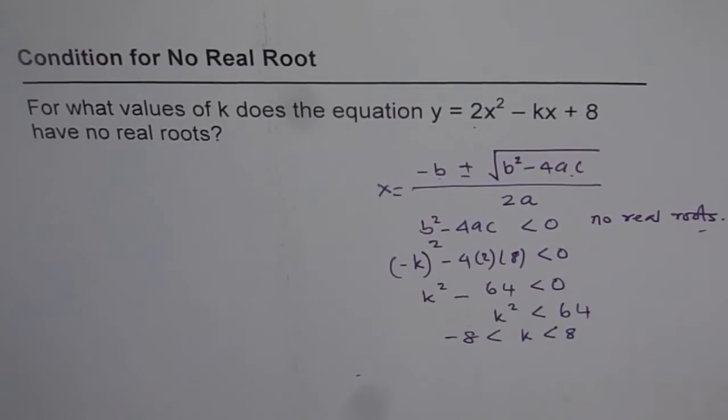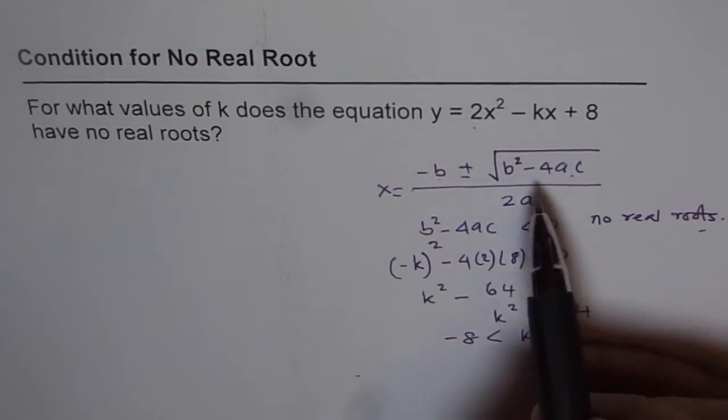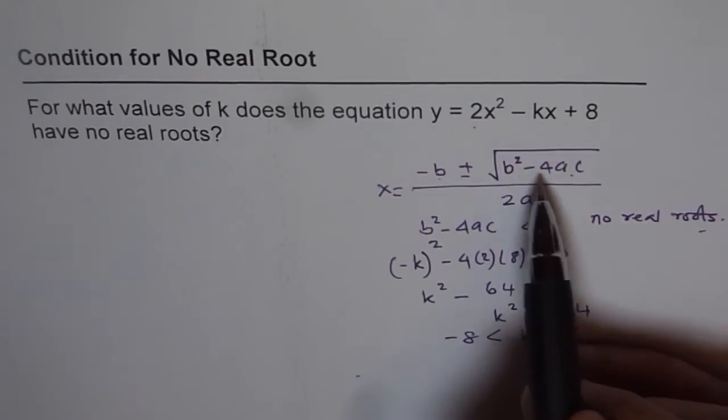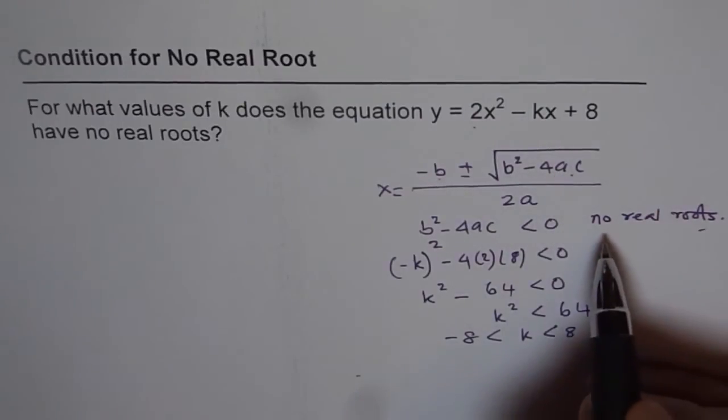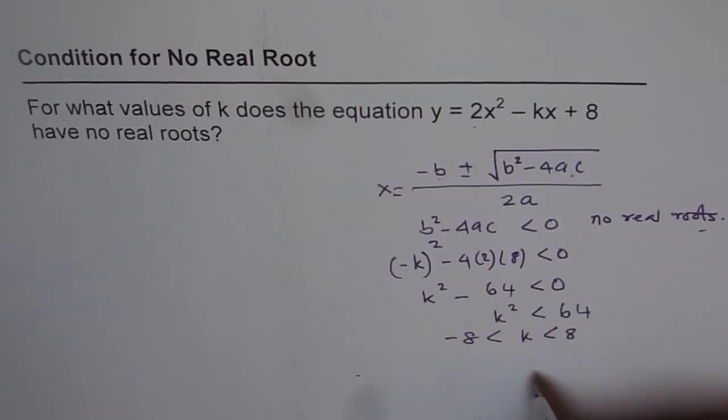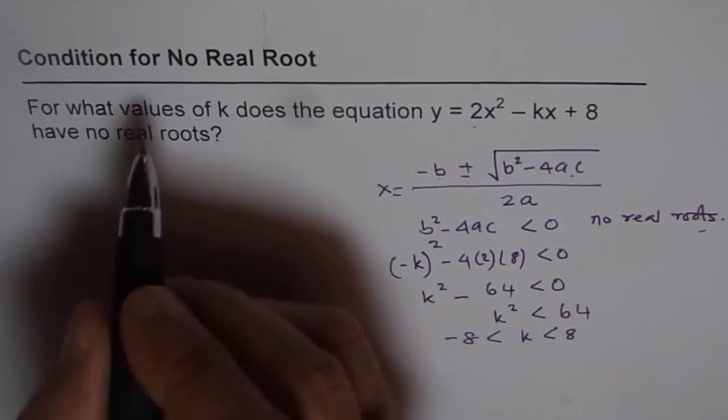So that becomes the value for k which will give you b² - 4ac as negative. And if b² - 4ac is negative, then we will not have any real root. We will have imaginary roots. So that is the answer. The k is between -8 and +8.